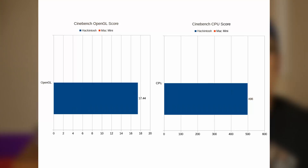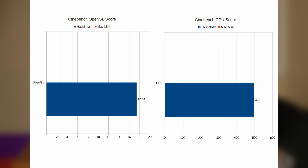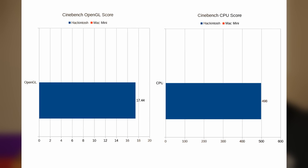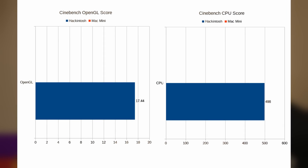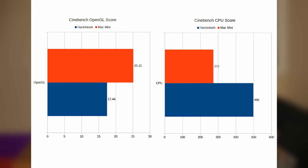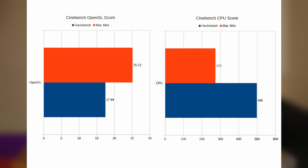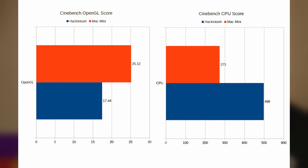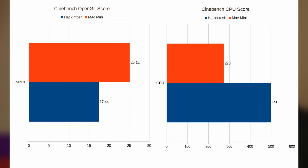Moving on to Cinebench, the Hackintosh got an OpenGL score of 17.44 frames per second and a CPU score of 498. The 2014 Mac Mini got an OpenGL score of 25.12 frames per second and a CPU score of 273. So here we can clearly see the differences between the more powerful processor in the Hackintosh and the more powerful integrated GPU in the Mac Mini.